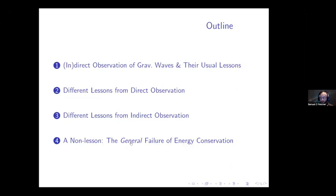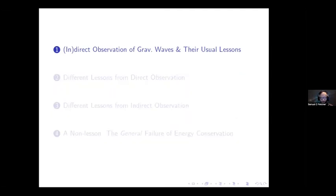In the last section, I'm going to talk about some non-lessons — maybe just one or two non-lessons. In particular, the general failure of energy conservation, which is sometimes seen as a consequence of gravitational waves, but one that I don't endorse, and I'm going to explain why that's a non-lesson. So let's get started with the indirect and direct observation of gravitational waves and the usual lessons that people draw from them.